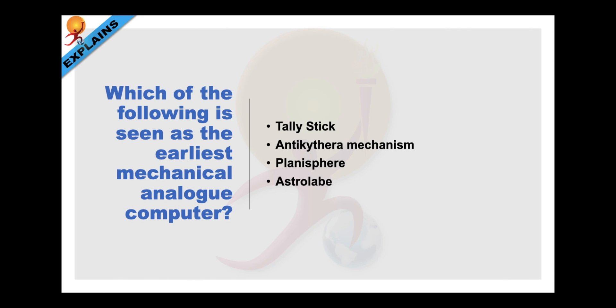Which of the following is seen as the earliest mechanical analog computer? Well, the answer is second. The Antikythera Mechanism in ancient Greek is believed to be the earliest mechanical analog computer. It was designed to calculate astronomical positions and eclipses for calendar.